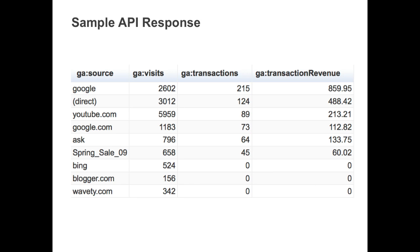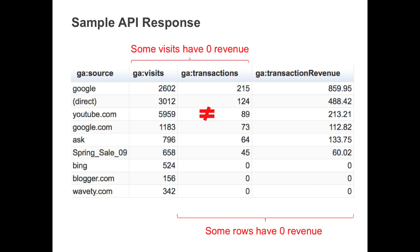There are two important observations about the data returned. First, some rows have zero dollars in revenue. Second, the number of visits and number of transactions for each source are very different. Generally, visitors will make one e-commerce transaction in their visit. The reason why the number of visits and number of transactions is different is because this data includes visits that didn't transact and had zero dollars in revenue.